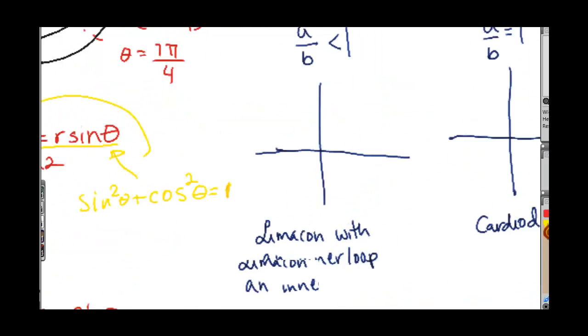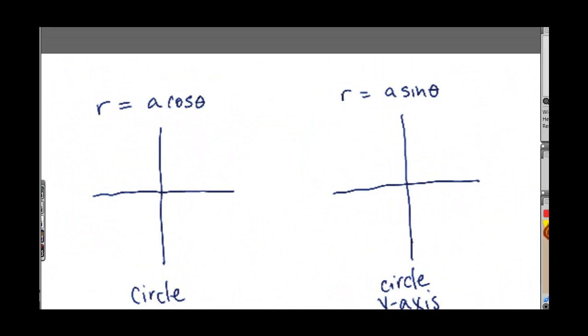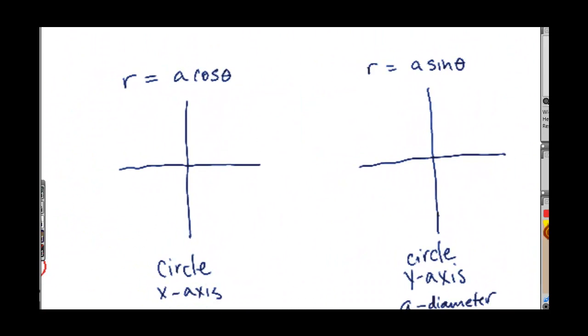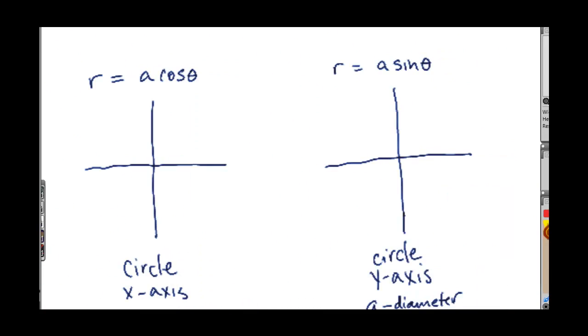All right, so let's start out basic and then we'll build to more complex functions. The first two we're going to do is the circles. If I have r equals a cosine theta, that's going to be a circle that looks like this on the x-axis where a is the diameter of the circle.